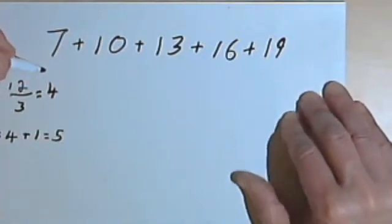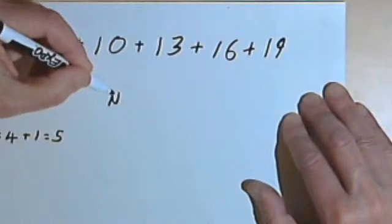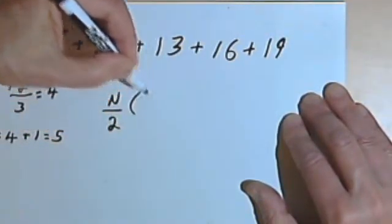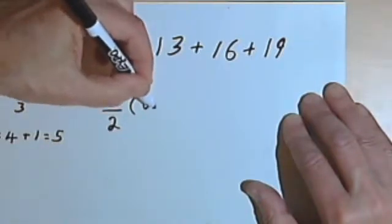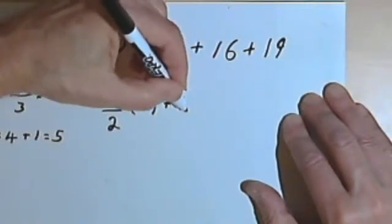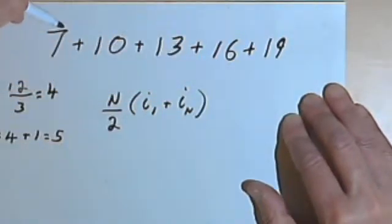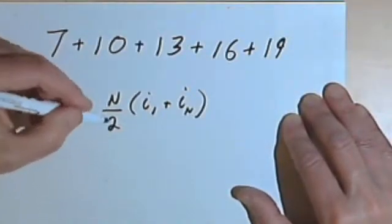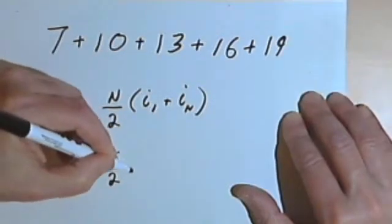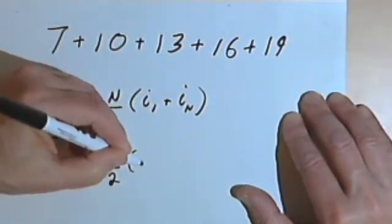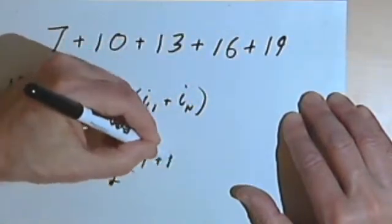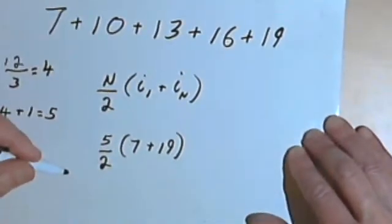Okay, let's plug that into the formula we had. So this new formula was n, the number of terms, divided by 2, times the first term, which is 7, i sub 1, plus the last term, the i sub n term, which is 19. Okay, so the number of terms is 5, so n over 2 becomes 5 over 2. i sub 1 was 7, so that's 7 plus i sub n, 19. And let's see what we can turn this into.